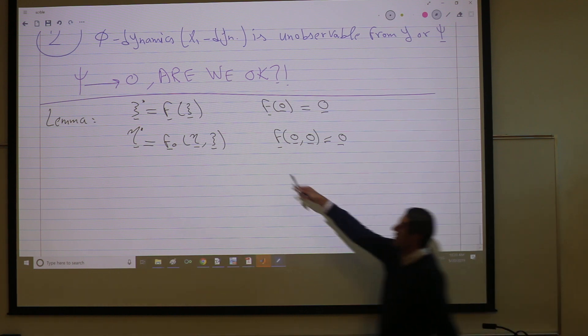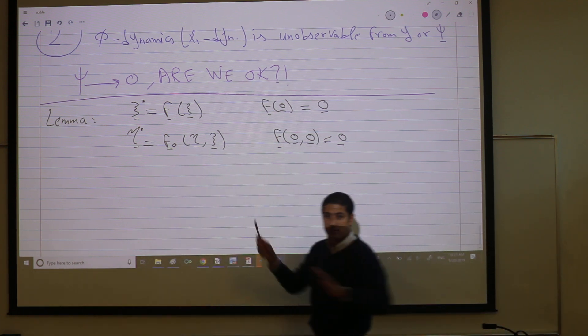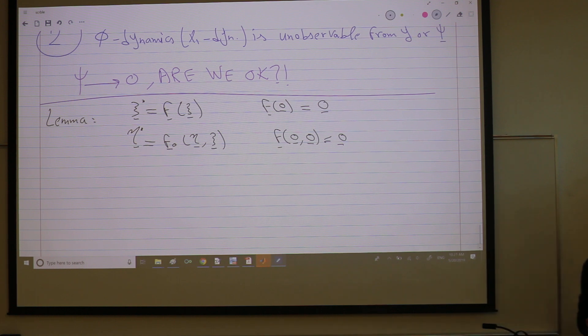Well, if I stabilize the zeta dynamics, I get stability for the epsilon, right? This is what I am aiming for.